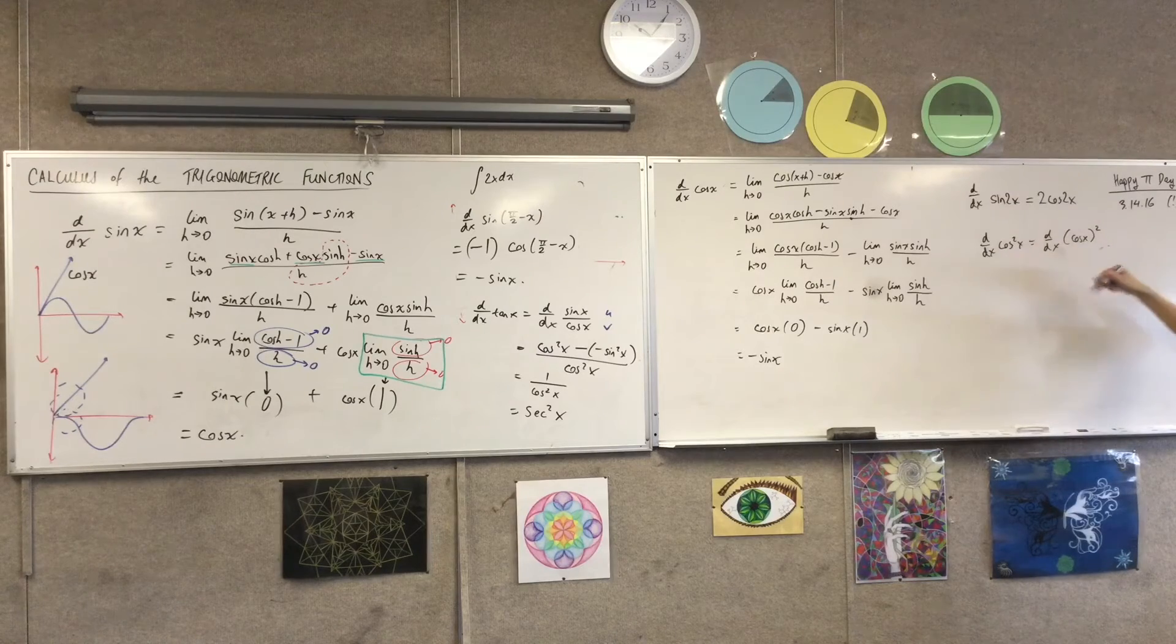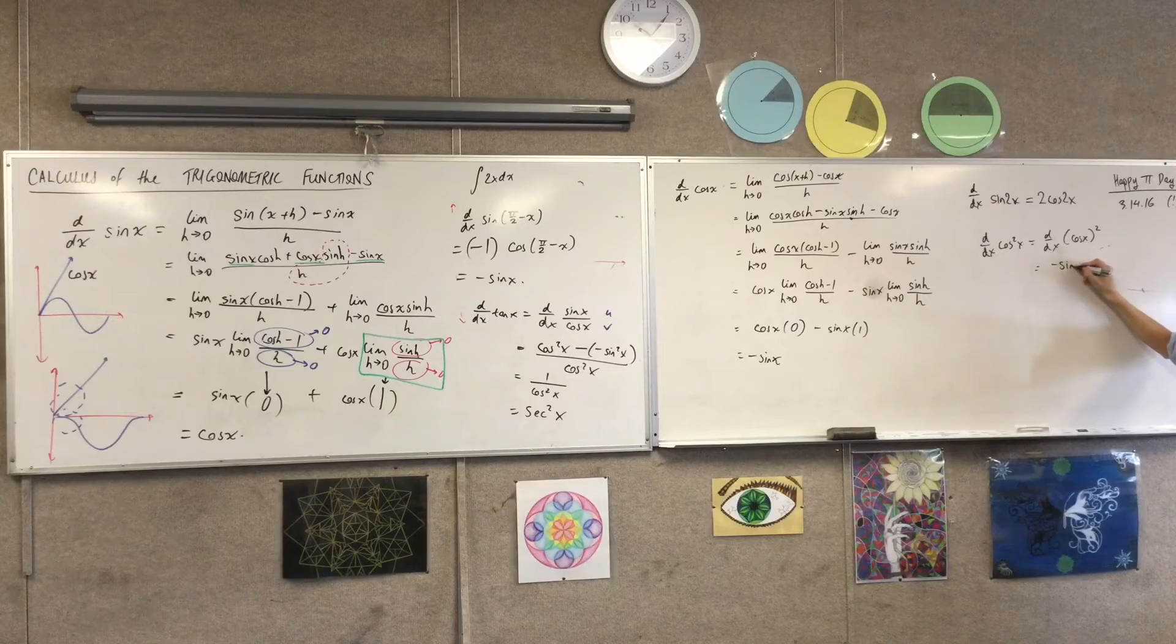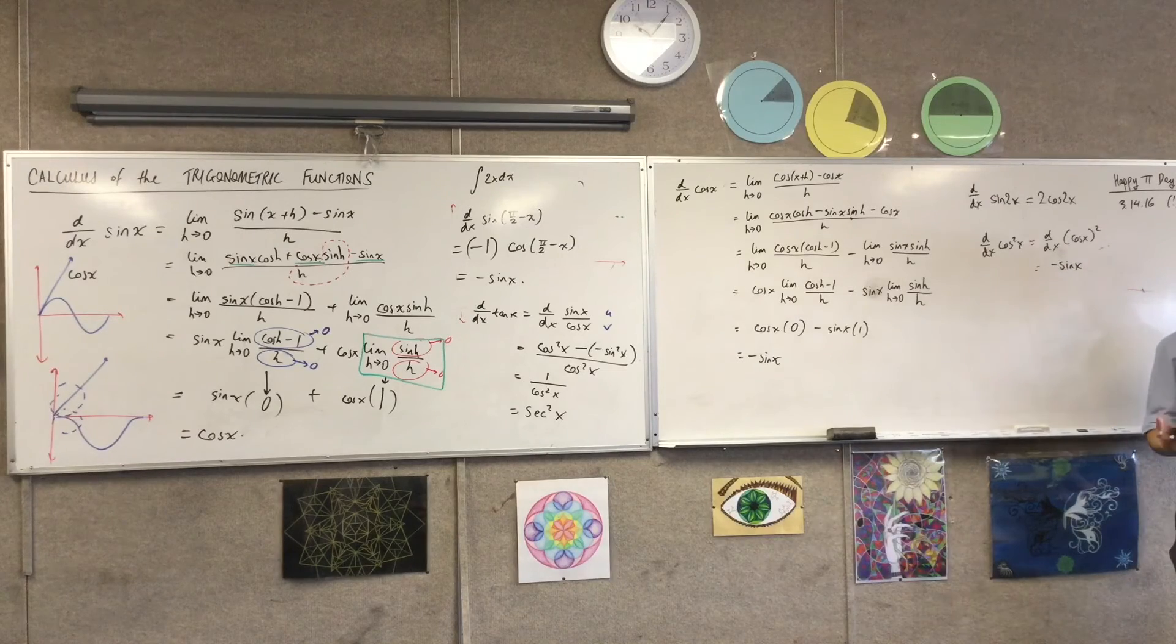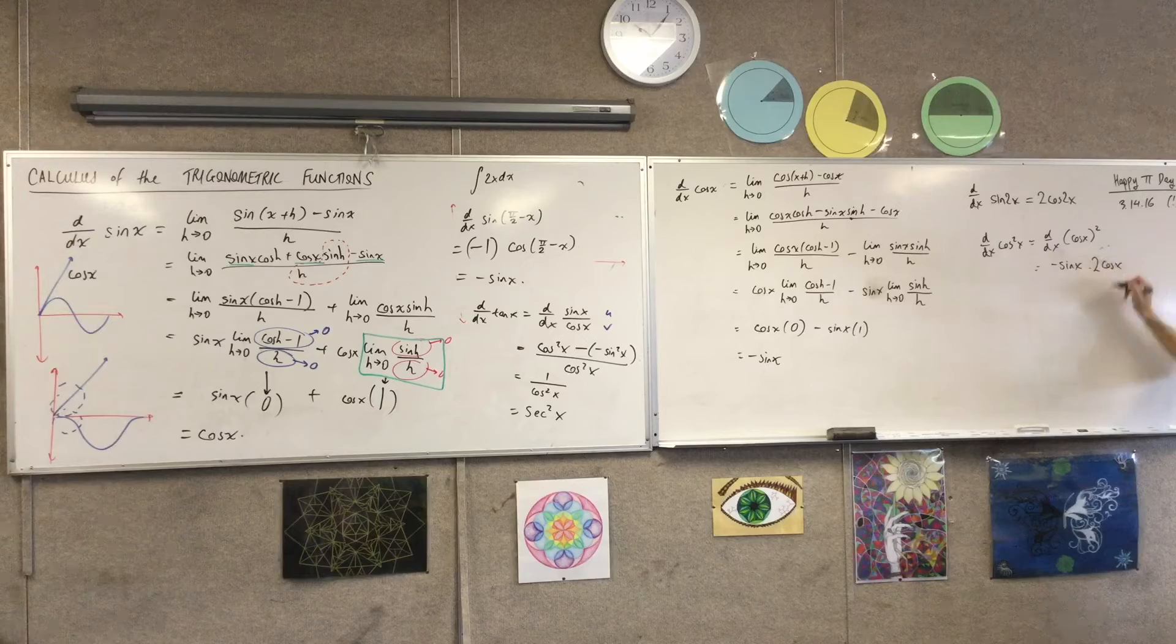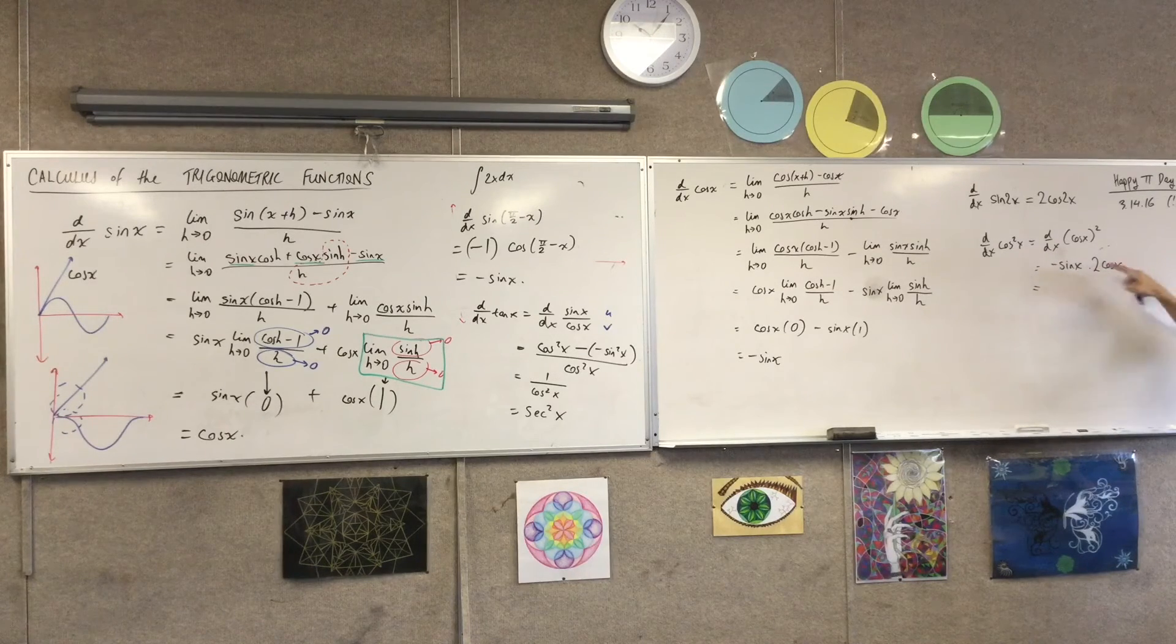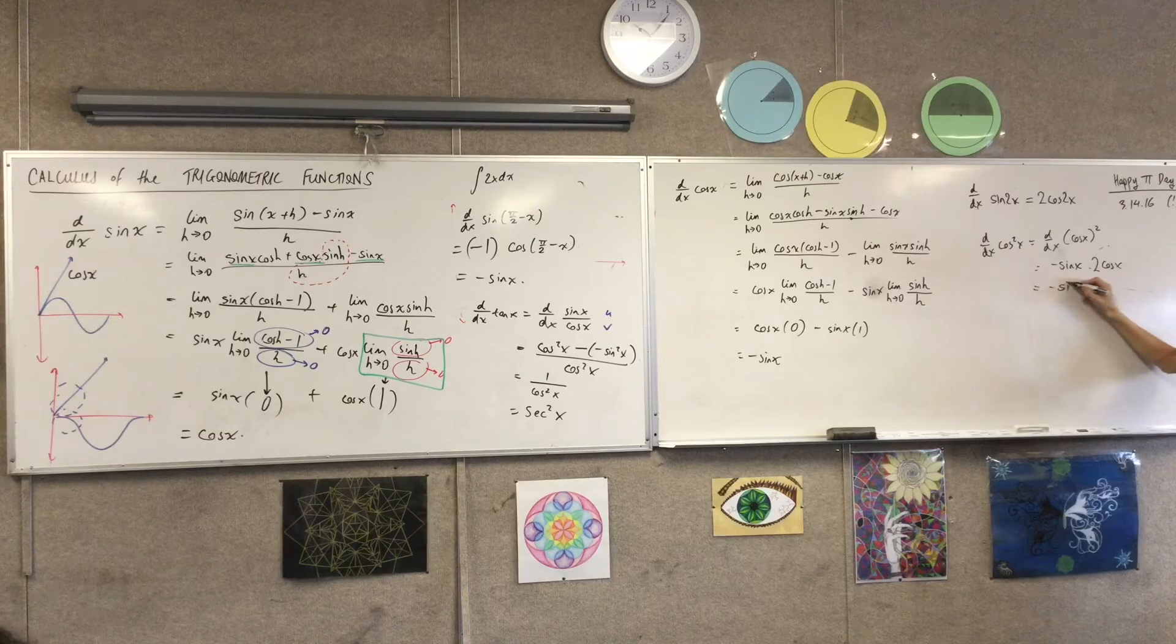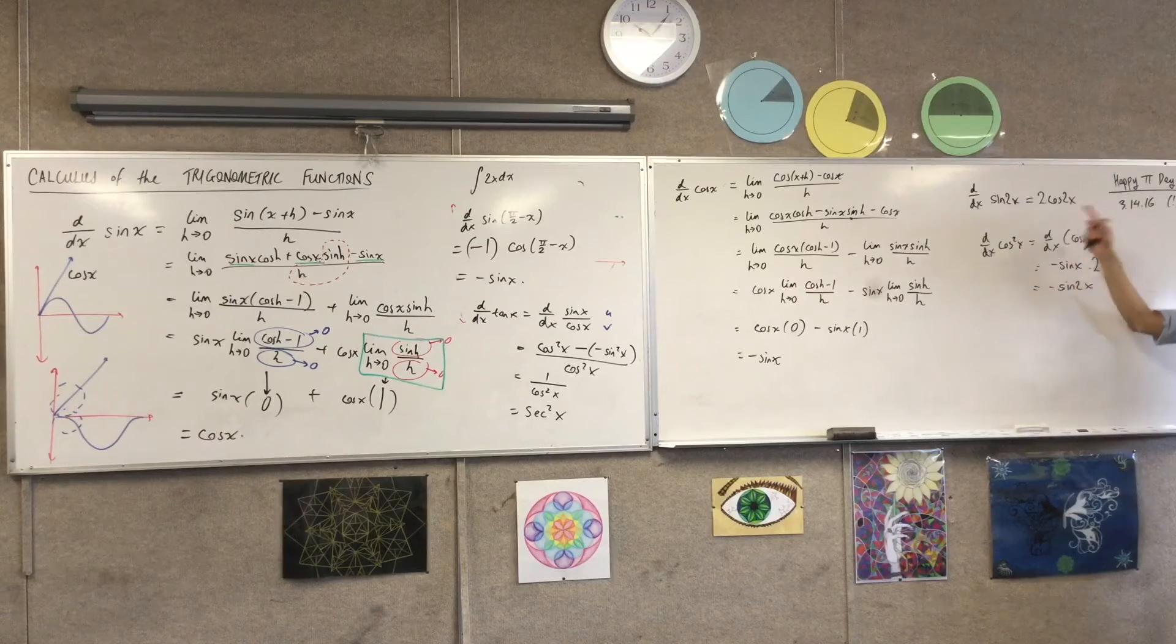So I'm going to do the inside, which is minus sine x. And then I'm going to do the outside, which is bring the power down and reduce the power by 1. Which looks to me like minus 2 sine x cos x. That sounds like this, doesn't it? And not that that was necessarily essential, but okay.